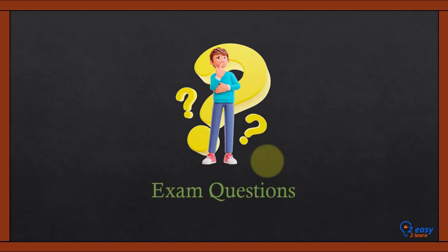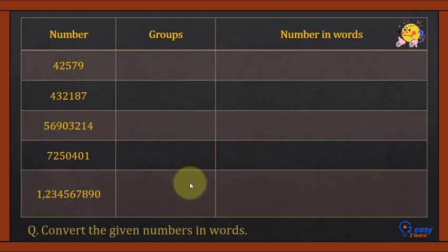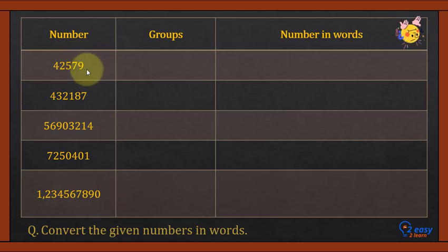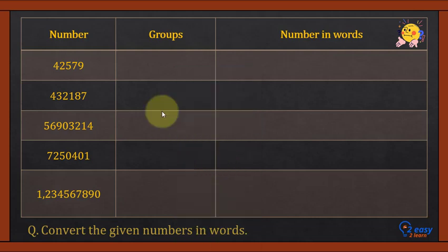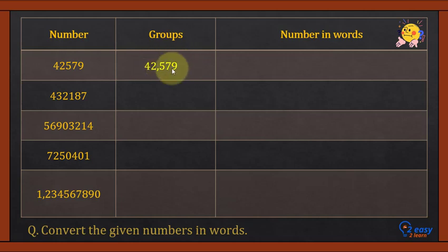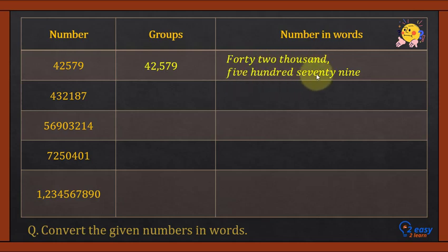Let's solve a few exam questions. Convert the given numbers into words. Pause the video, solve the problem, and check your solution. Now divide the number into groups of three digits from the extreme right: one, two, three — place a comma. The first group is the hundreds group and the second is the thousands group. So the answer is: forty-two thousand five hundred seventy-nine.